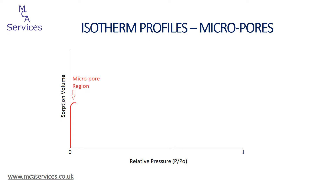Consequently, micropores will be filled with adsorbate very quickly and this is generally complete at very low relative pressures. We can see that the isotherm is curving towards being horizontal, which shows that no further adsorption is occurring because the micropores are completely filled with adsorbate. This curvature is usually complete by around 0.005 relative pressure, and it's worth noting that micropore isotherms usually start at very low relative pressures, typically in the order of 10⁻⁶ millimeters of mercury absolute pressure.